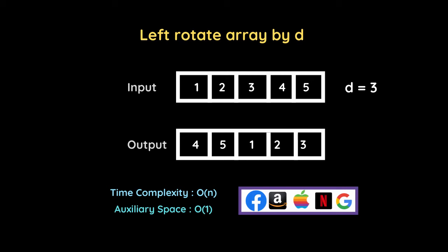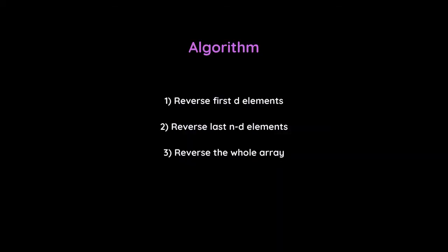The time complexity we have to solve this problem in is O(n), which means we cannot use more than one loop. The auxiliary space is O(1), which means we cannot use any additional array to solve this problem. This problem has been asked by many top MNCs like Facebook, Apple, Amazon, Google, and others.